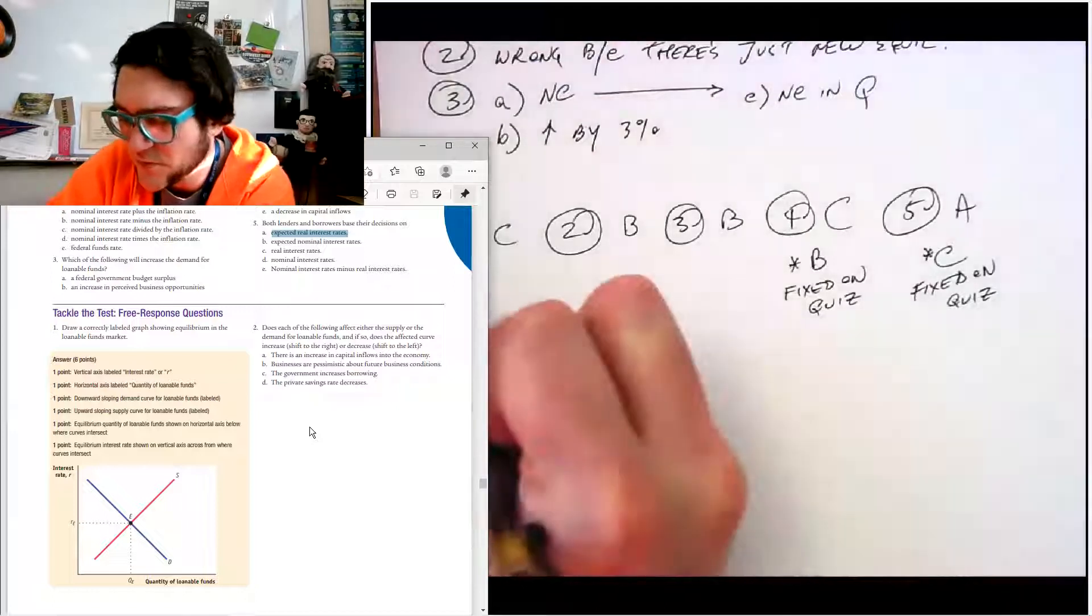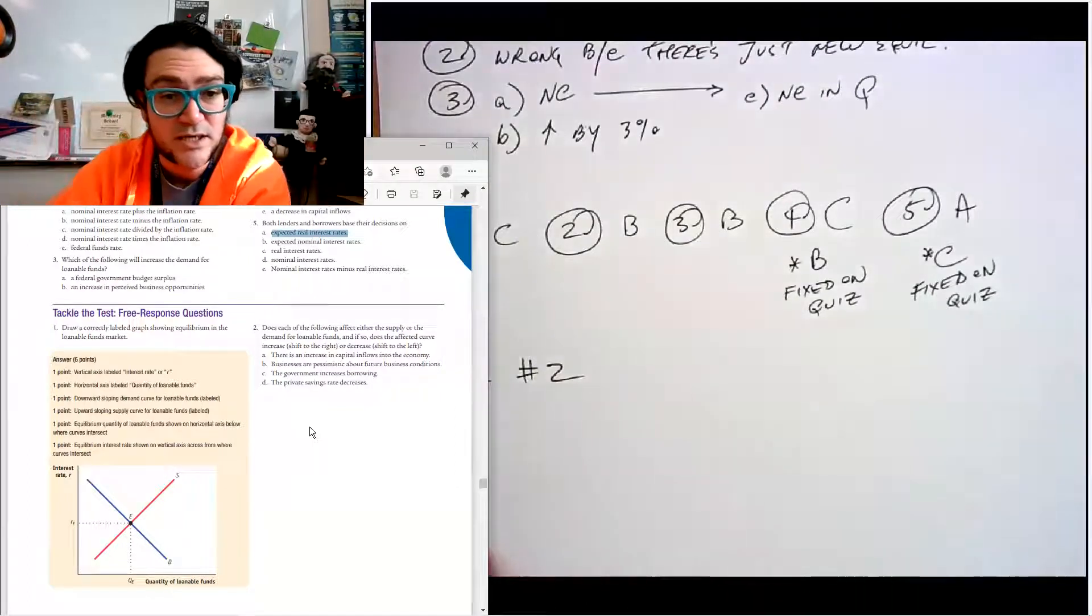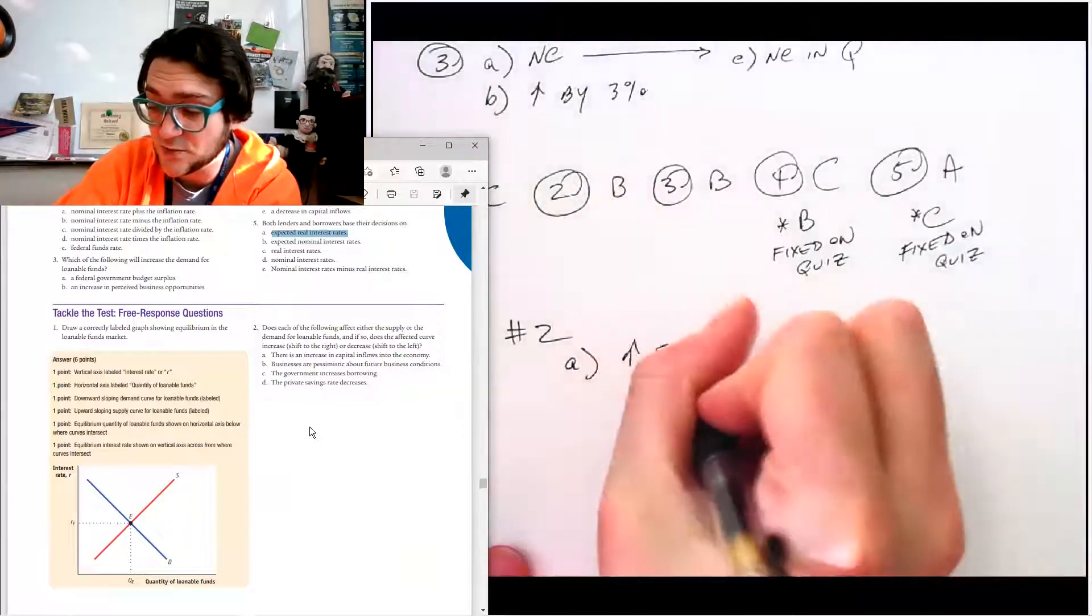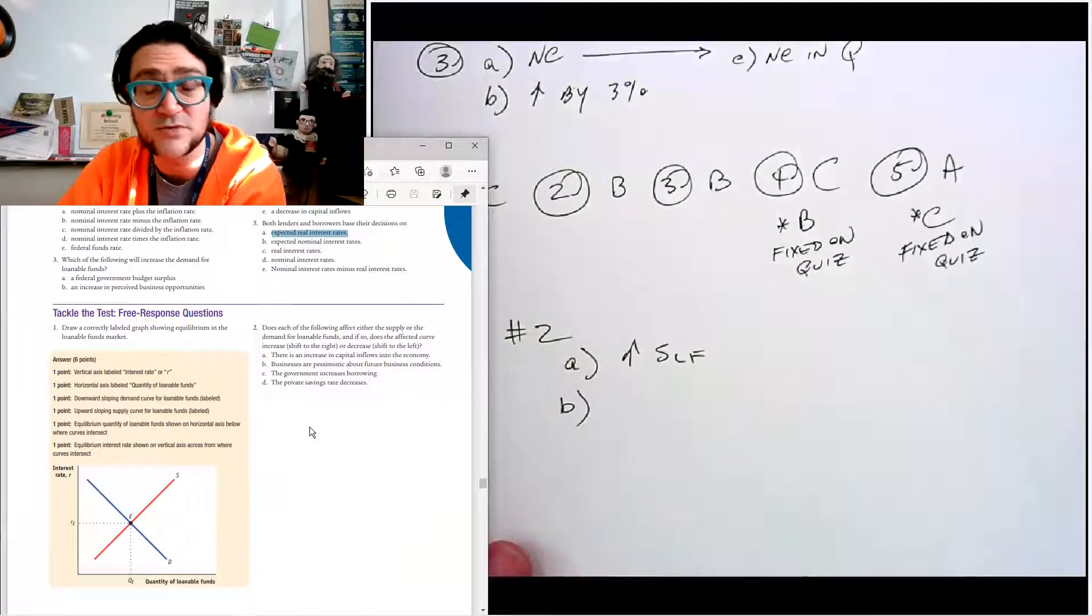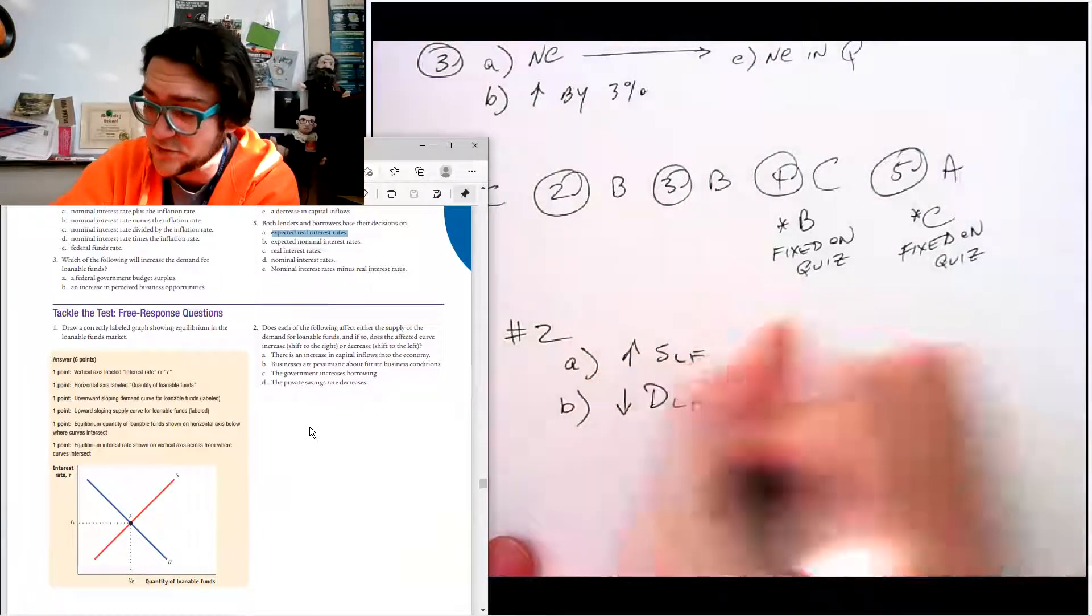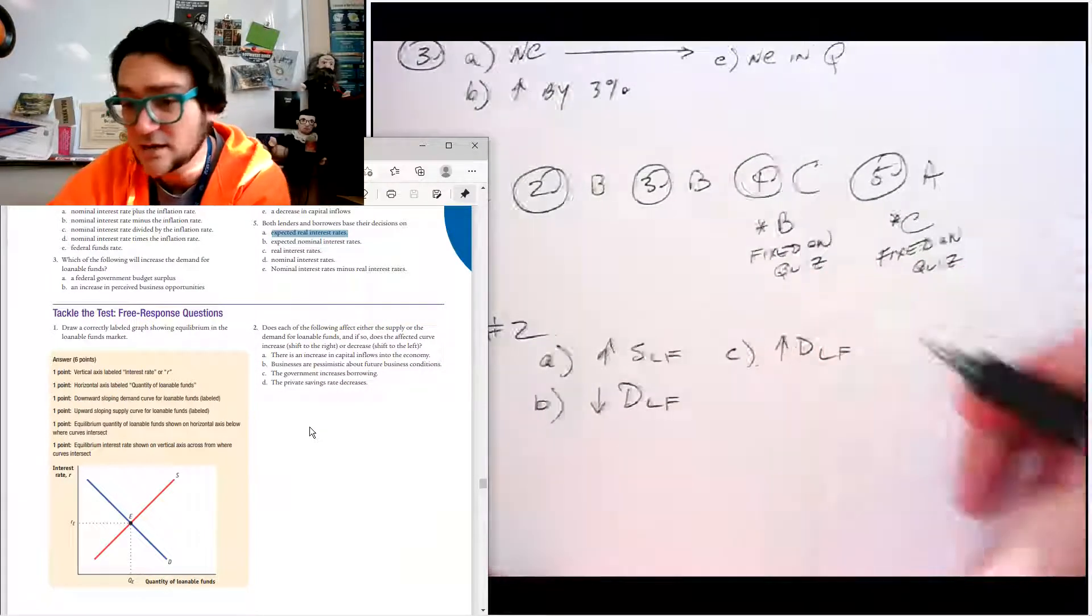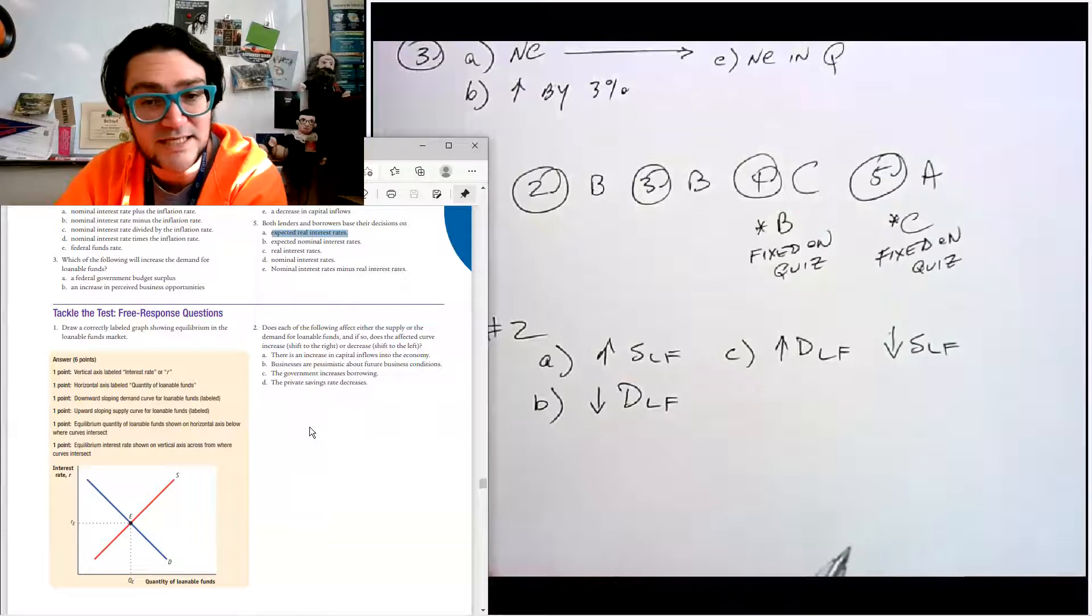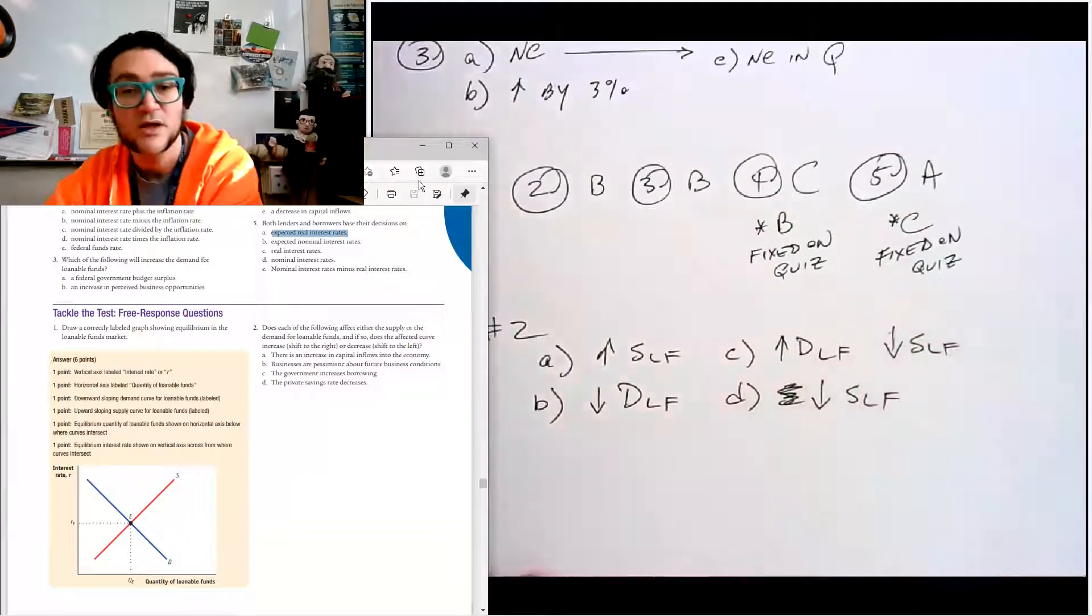Let's take a look at number two, free response. Number two says do each of the following affect supply or demand? Does it increase or decrease? Increase in capital inflows - if there's an increase in money flowing in, that's an increase in the supply of loanable funds. Businesses are pessimistic about future business conditions - they don't think the future is going to be very good, so they're not going to borrow today. That's going to decrease the demand for loanable funds. Government increases borrowing - the traditional is to say increase in demand. You could also say decrease in supply of loanable funds, either one's fine. Private saving rate decreases - that one's pretty clearly the supply decreasing for loanable funds. All right, hopefully this helped you.